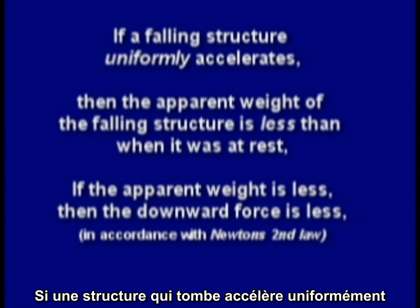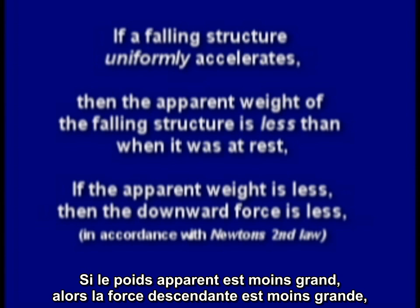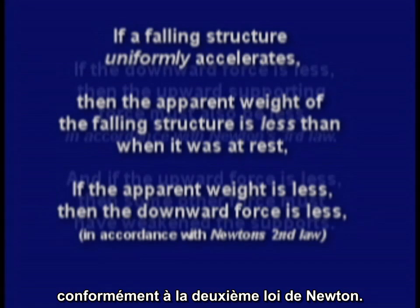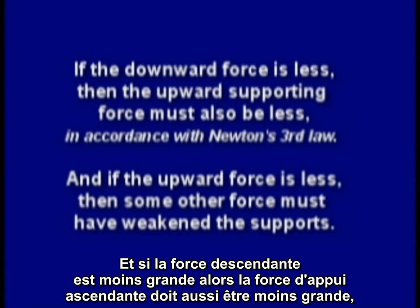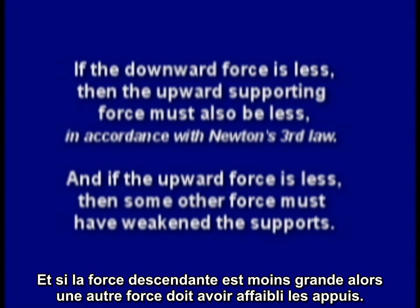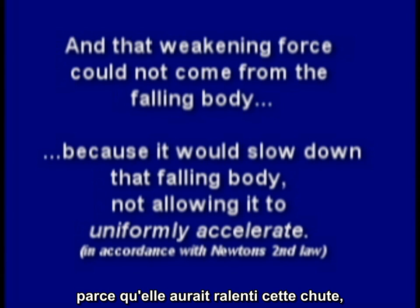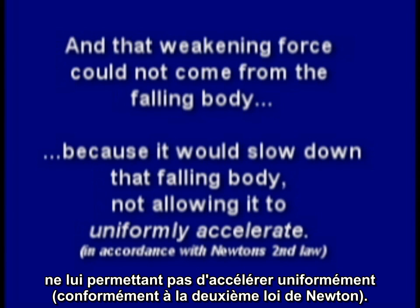If a falling structure uniformly accelerates, then the apparent weight of the falling structure is less than when it was at rest. If the apparent weight is less, then the downward force is less, in accordance with Newton's second law. And if the downward force is less, then the upward supporting force must also be less, in accordance with Newton's third law. And if the upward force is less, then some other force must have weakened the supports — and that weakening force could not come from the falling body, because it would slow down that falling body, not allowing it to uniformly accelerate.